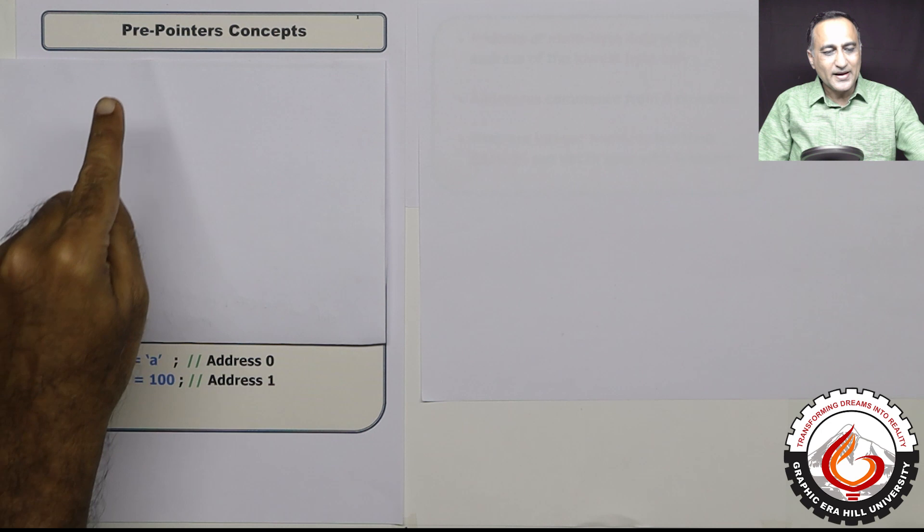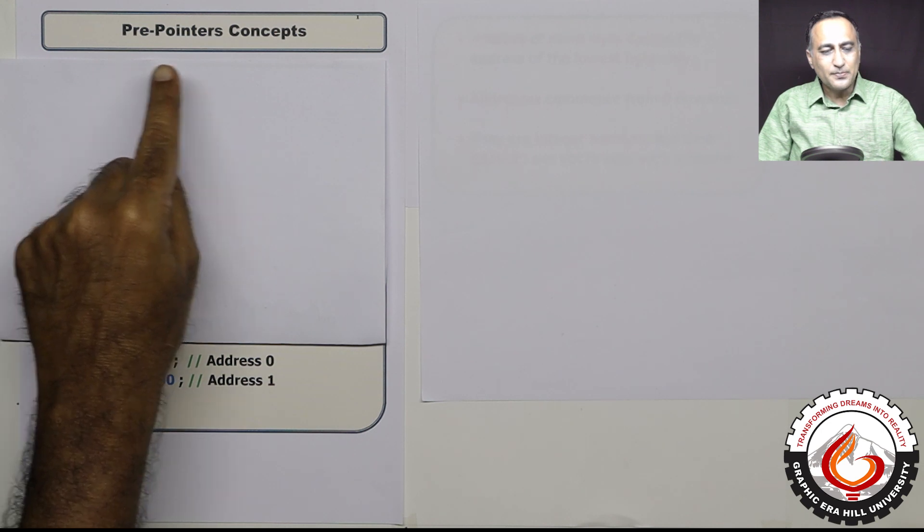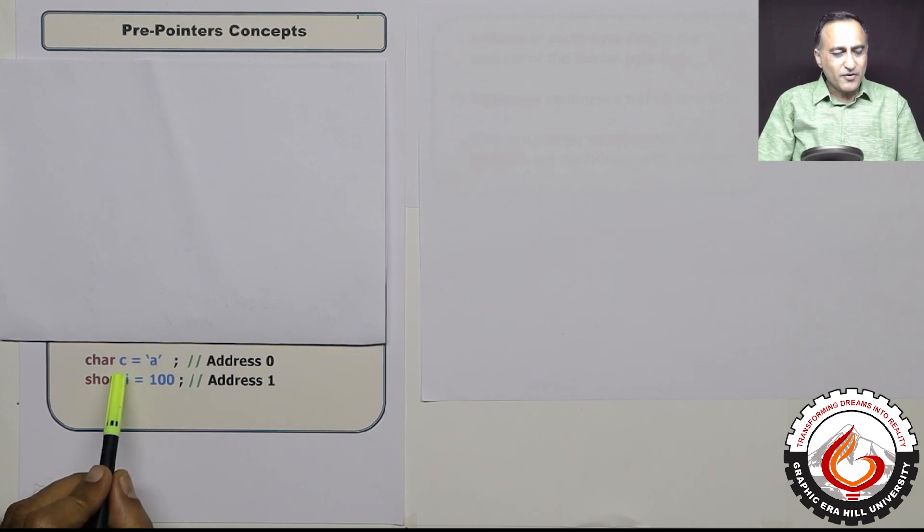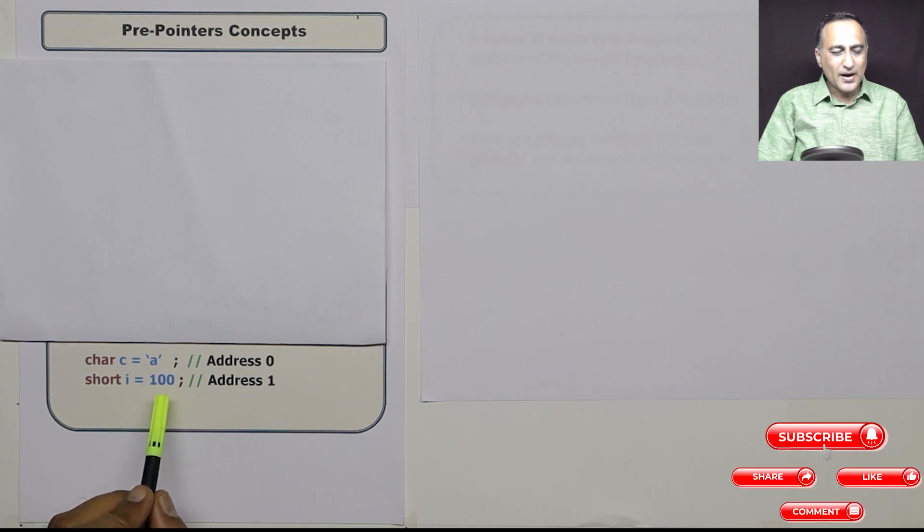Before we can head to pointers, let's try to take a look at certain pre-pointer concepts. Let's say I have declared a character variable c and given it the initial value small a, and let's say I have declared a short int i with the initial value 100.